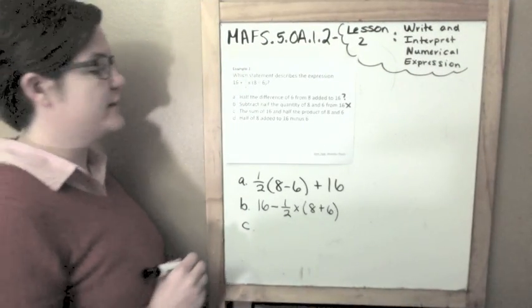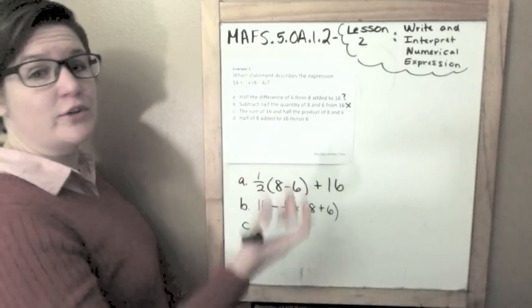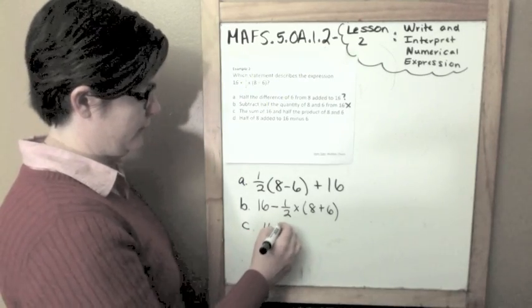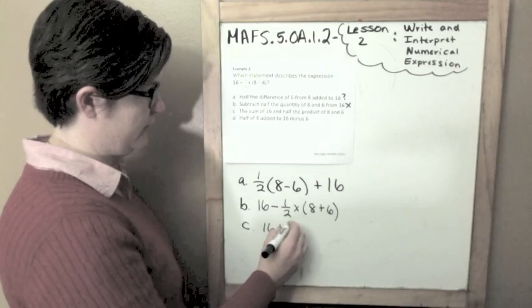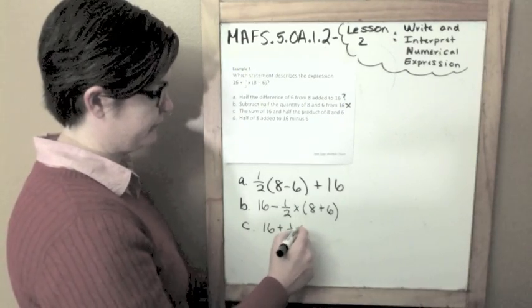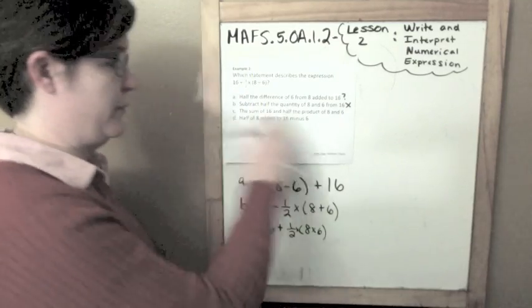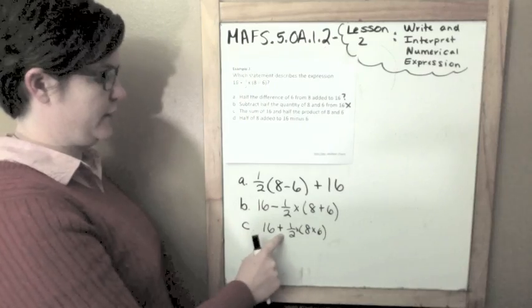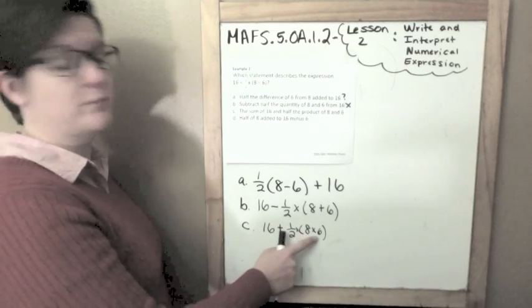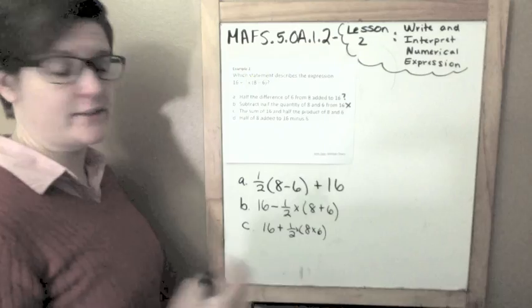C says the sum of 16 and half the product of 8 and 6. You can take it one step at a time to create this numerical expression. So the sum of 16 and half the product of 8 and 6. Half of the product means I'm multiplying 8 times 6. Well, here I was subtracting 8 minus 6, so C is not an answer.